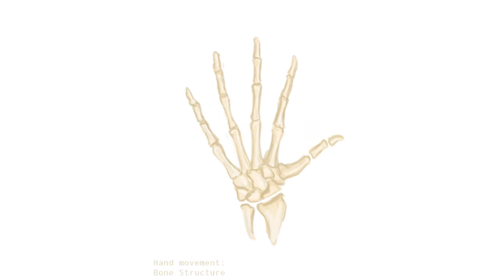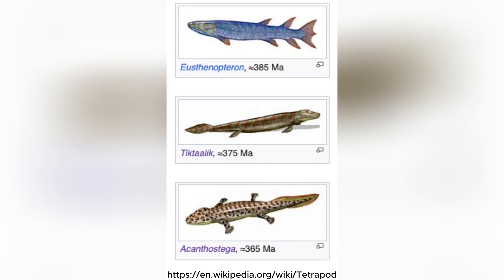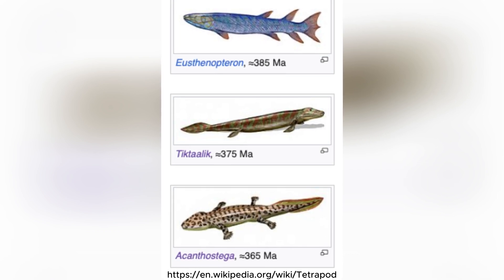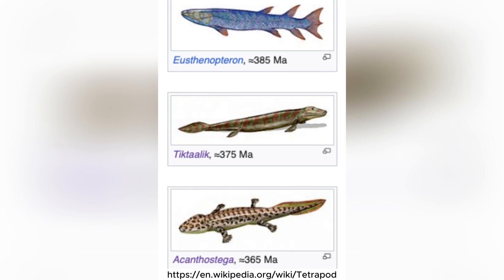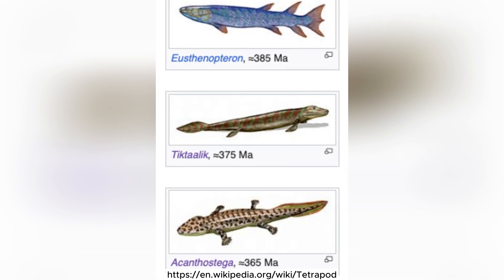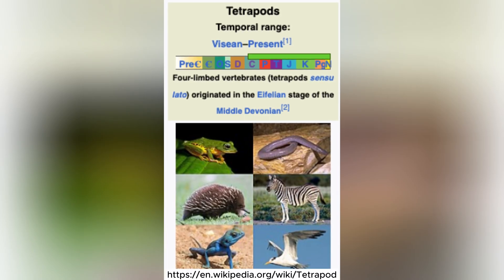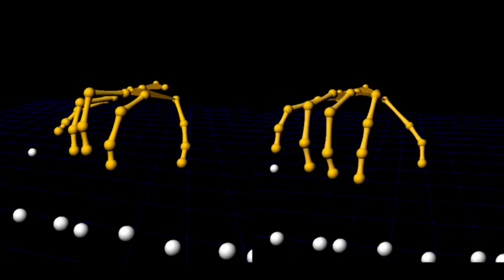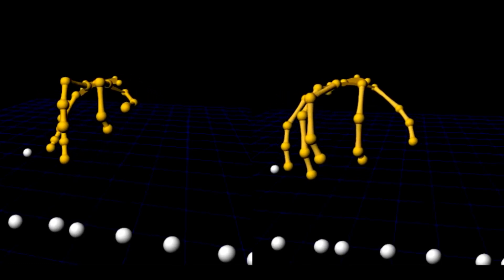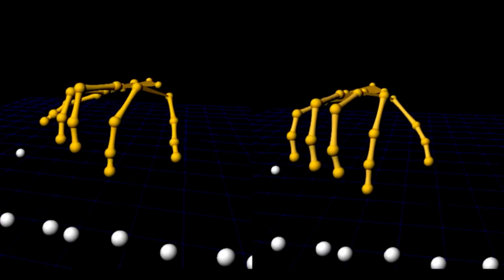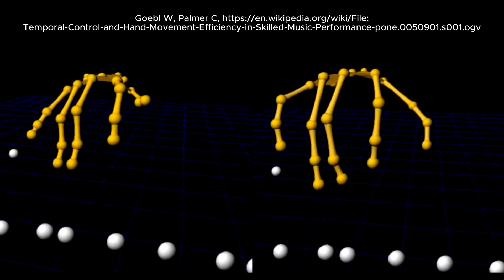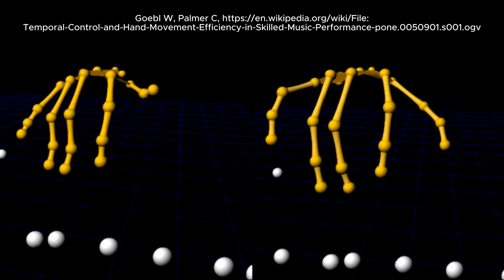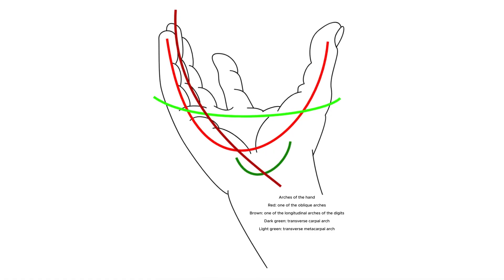The five-fingered structure in humans is a direct legacy of the evolutionary journey that began more than 375 million years ago. While early tetrapods experimented with different numbers of digits, the five-fingered limb became the most efficient structure for land-dwelling vertebrates. Humans, like many other animals, inherited this trait, and it has played a key role in shaping our ability to manipulate the world around us. The simple act of holding something in our hand is a testament to the long evolutionary history behind the five fingers we often take for granted.